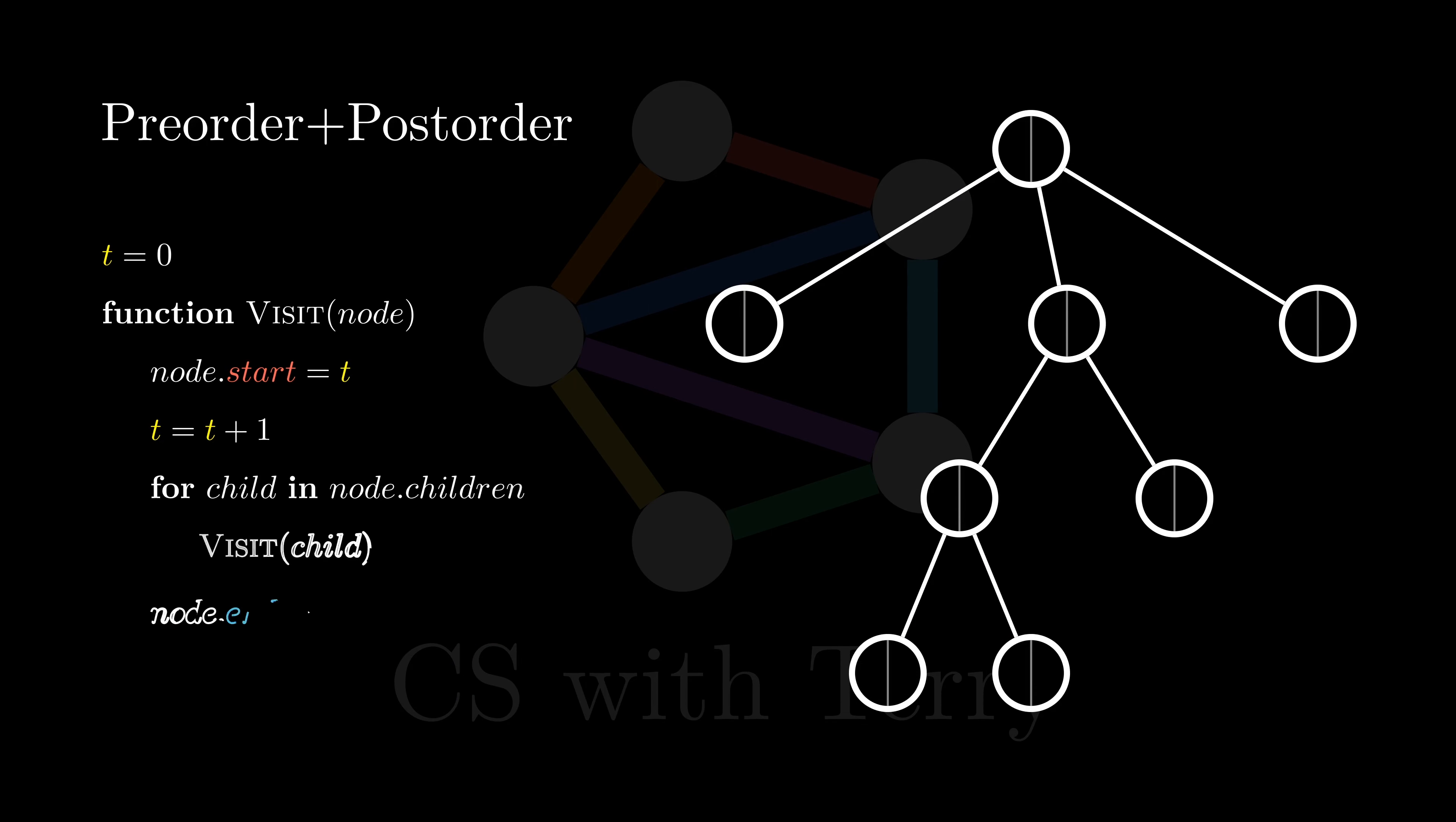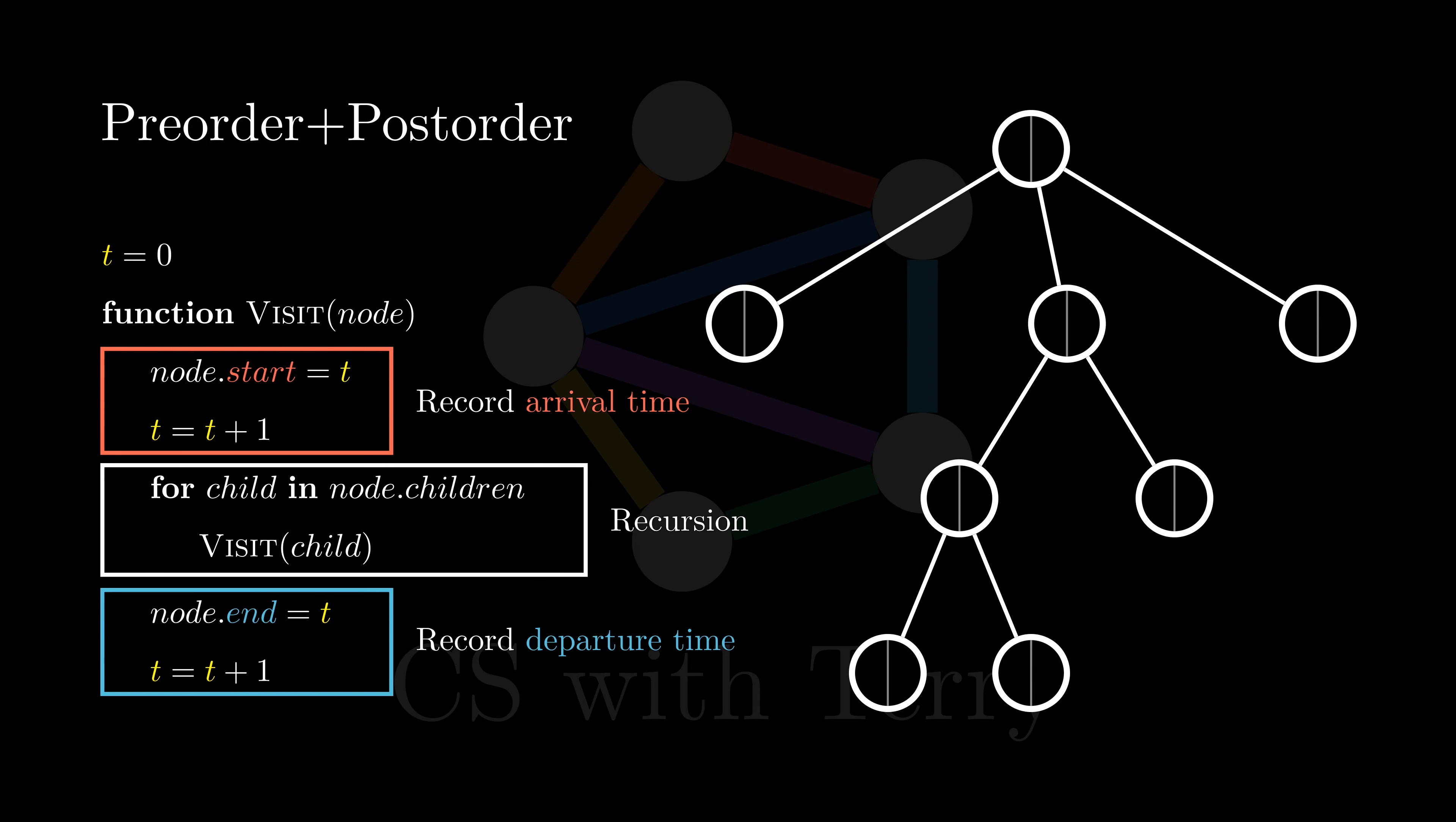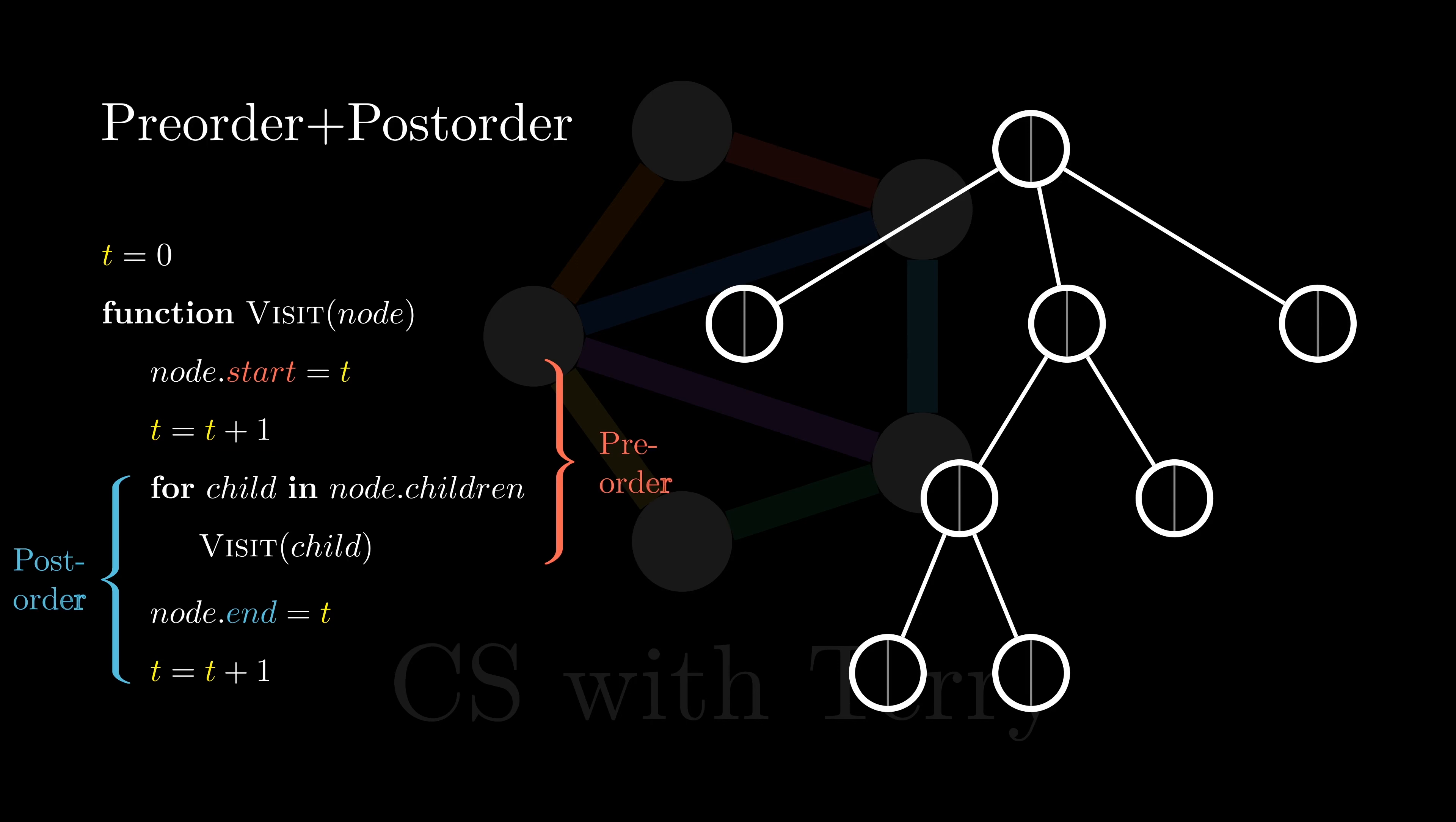We can slightly modify the program, and record the node's arrival and departure time simultaneously. We still need to make a recursive call to compute the arrival and departure time of the child nodes. By the way, the first half of the program is pre-order traversal, and the second half happens to be post-order traversal. Let's execute this code.